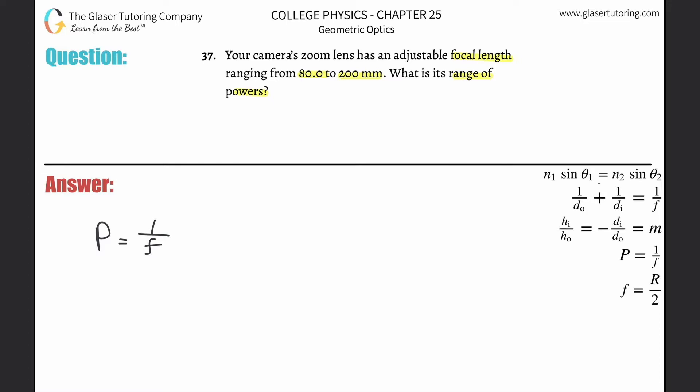I'll calculate the lower range here. This is the lower focal length, but a lower focal length will give us a greater power. In any case, this is given to us in millimeters, so I'm going to convert that into meters because those are the standard units.